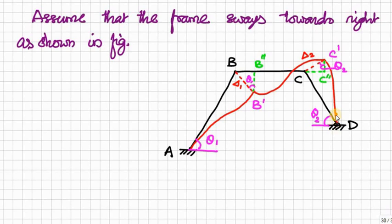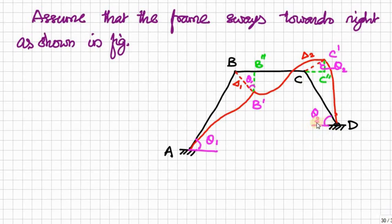Similarly, for CD member, delta 2 is perpendicular to the CD member. D is a hinge support, therefore there will be some rotation. Joining these two, maintaining the angle between BA and BC member here, and also maintaining the angle between CD and CB here, you have to connect these two points to get the deflected shape of the frame. This is a right triangle.